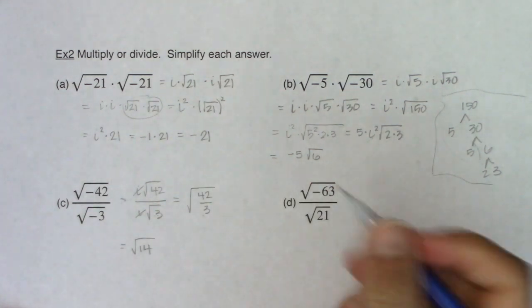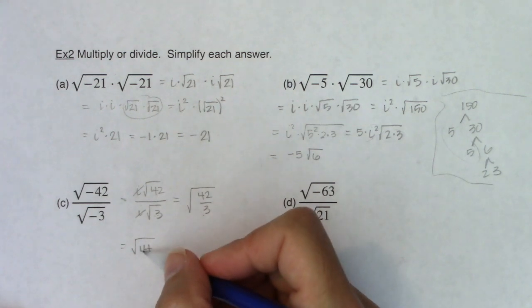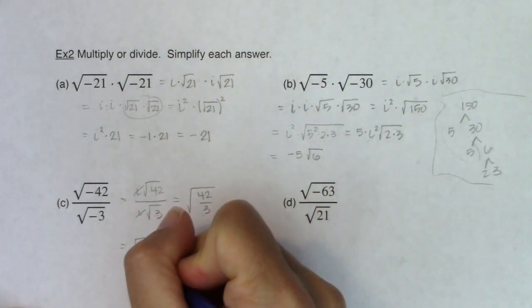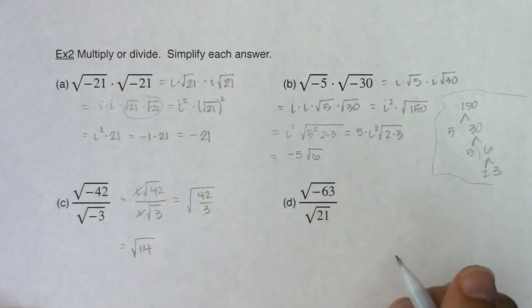Alright, so I'll look at the square root of 14. Now 14 doesn't break. It's just 7 and 2, so nothing can escape the radical at that point. So I'm going to leave my answer as the square root of 14.